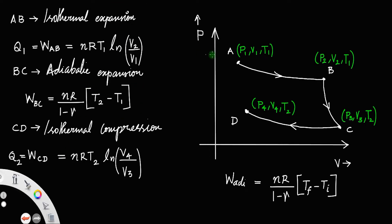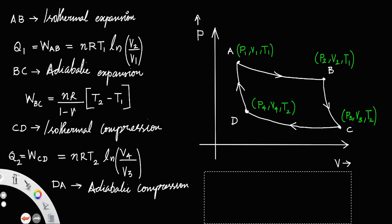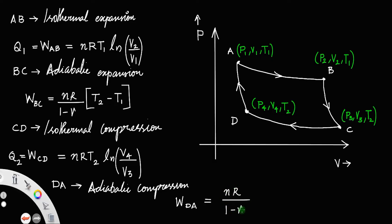The last process is the compression of gas from D to A. Since the temperature also changes, this type of compression is called adiabatic compression. For an adiabatic process, no heat is transferred, so the work done WDA = nR/(1−γ)·(T1−T2). These are the four different processes involved in the Carnot cycle.